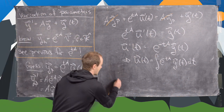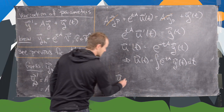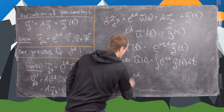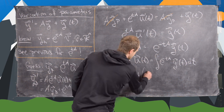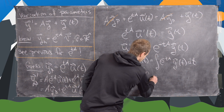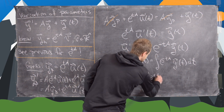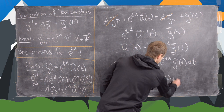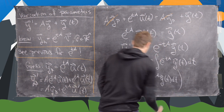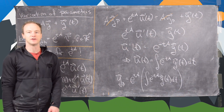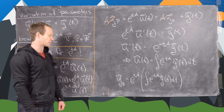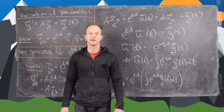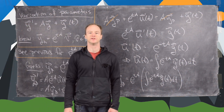So we have y_p equals e^(tA) times the antiderivative of e^(-tA) times the vector function g of t dt. That's how we use variation of parameters to find our particular solution. Next I'll clean up the board and then we'll do one of these examples.